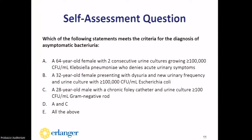Our first self-assessment question: which of the following meets the criteria for the diagnosis of asymptomatic bacteriuria? A: a 64-year-old female with two consecutive urine cultures growing 100,000 CFU of Klebsiella pneumoniae who denies acute urinary symptoms. B: a 32-year-old female with new onset dysuria and urinary frequency growing 100,000 CFU of E. coli. C: a 28-year-old male with a chronic Foley catheter and 100 CFU of gram-negative rod. D: A and C. E: all of the above. The answer is D—both patients in A and C had no acute urinary symptoms yet had a positive urine culture representing true bacteriuria.